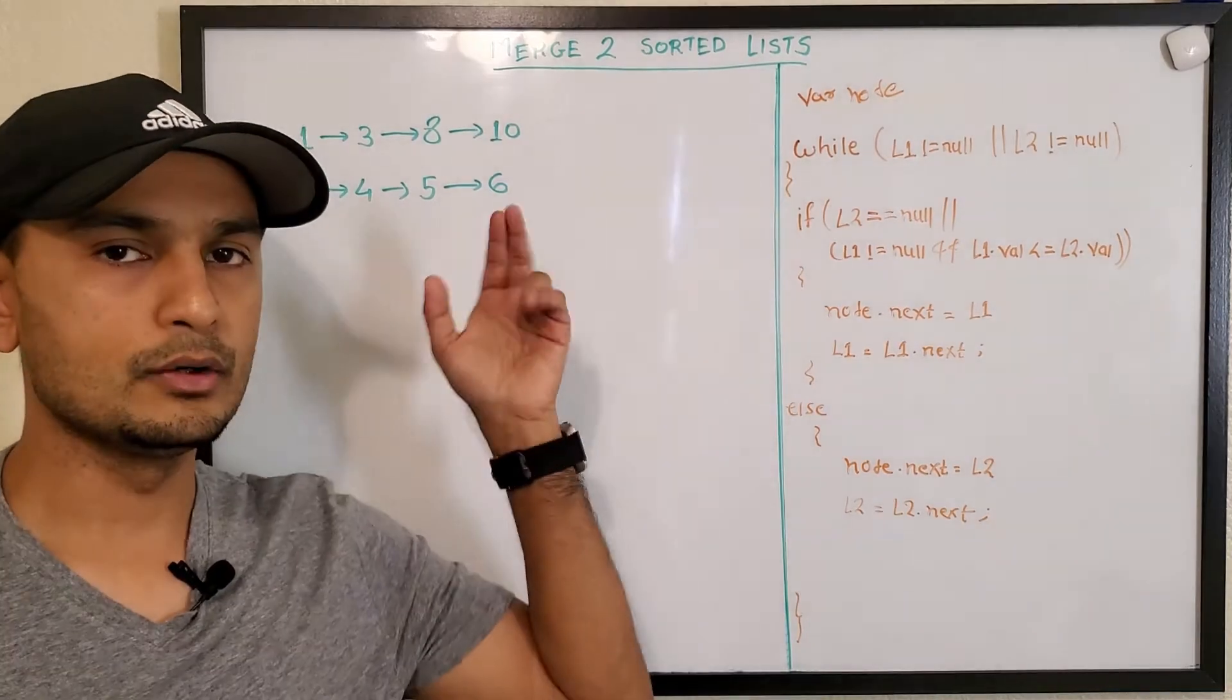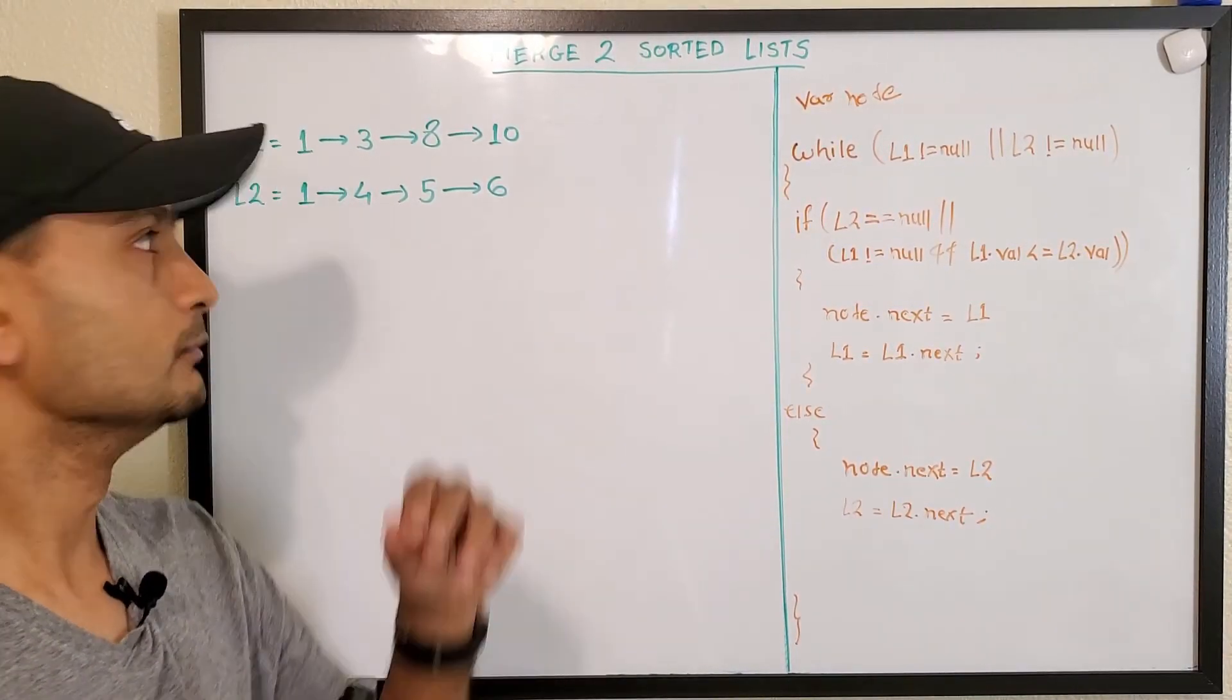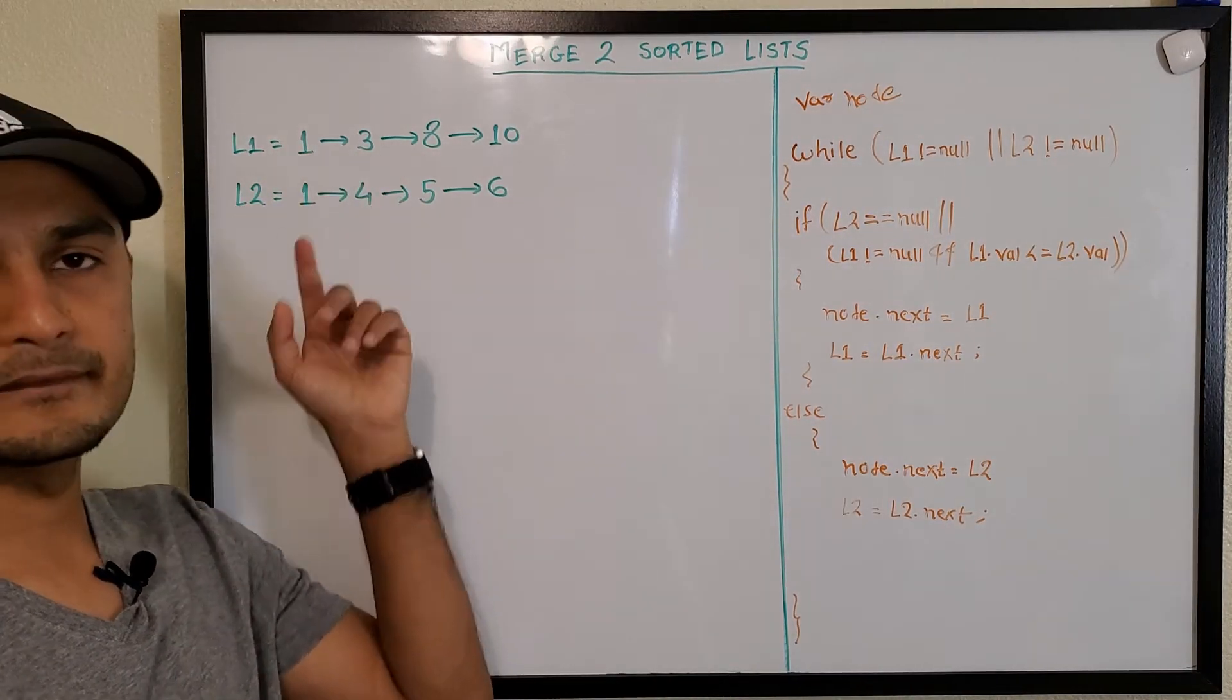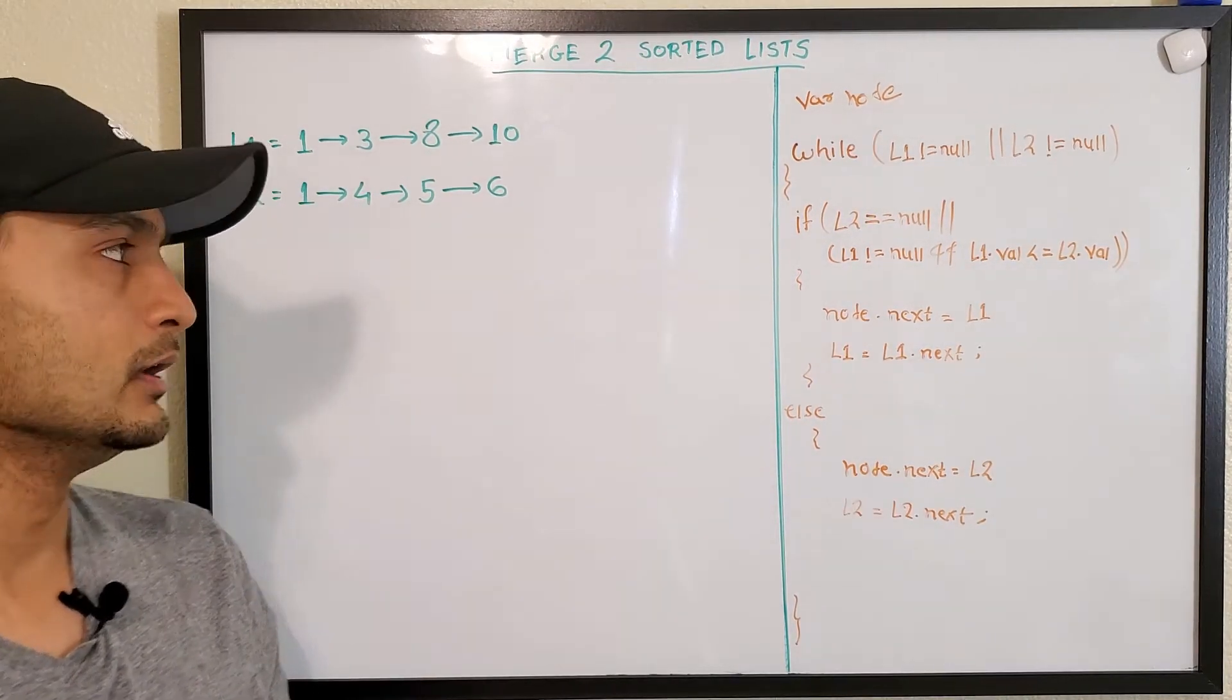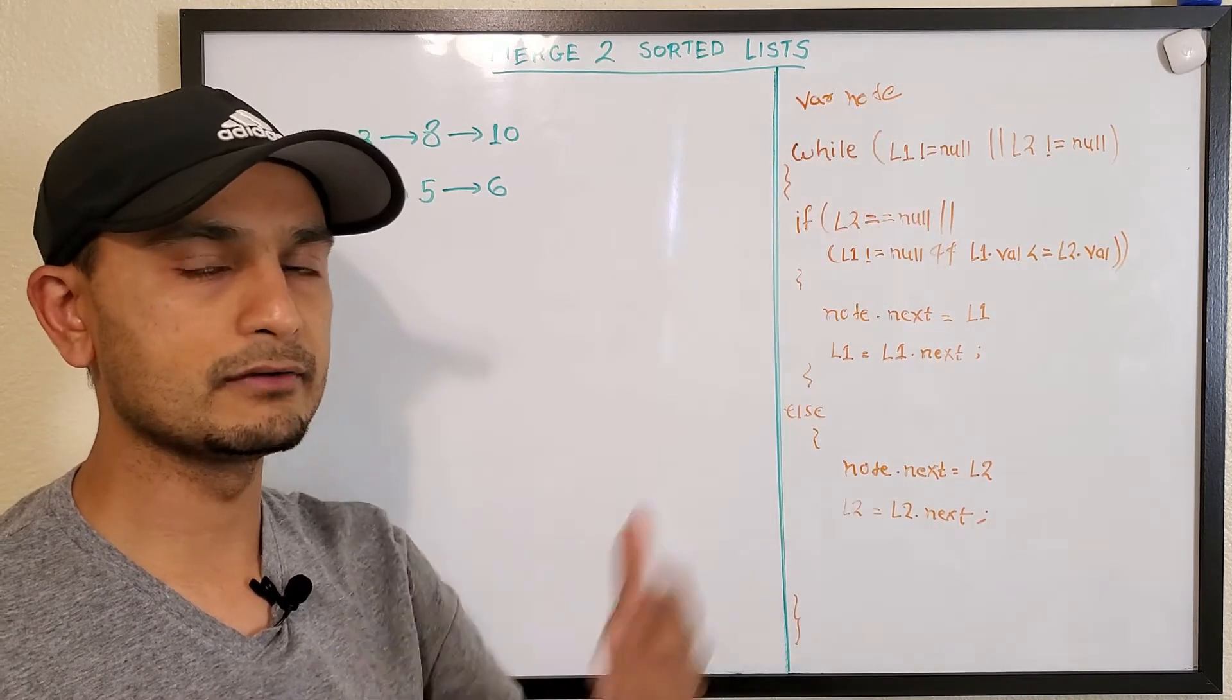Okay, so let's see how we'll solve this merge two sorted lists problem. These are the two sample lists that we took from the problem description, and this is the algorithm that we'll follow.